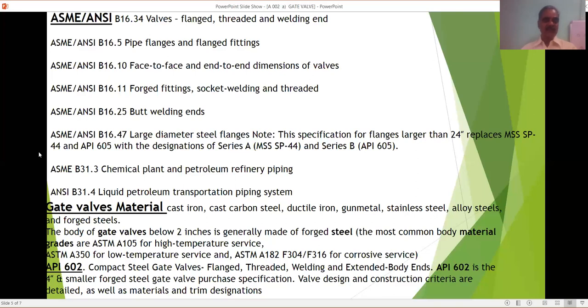Now B31.4, liquid petroleum transportation piping system, that is cross country pipelines. This cross country pipelines, whenever you are using cross country pipelines, we have to.